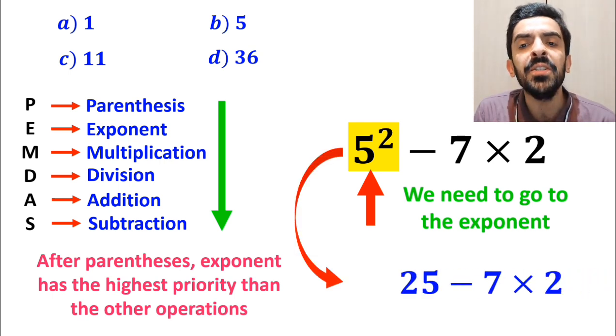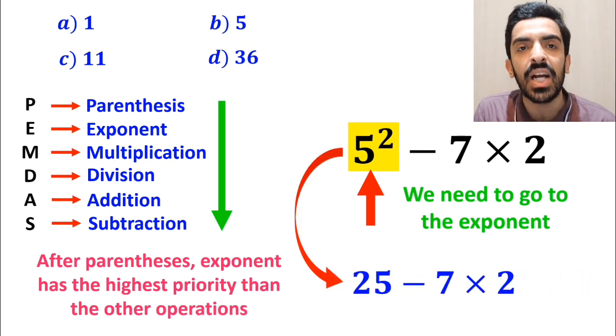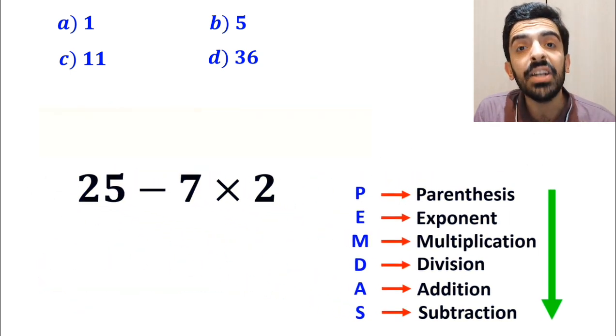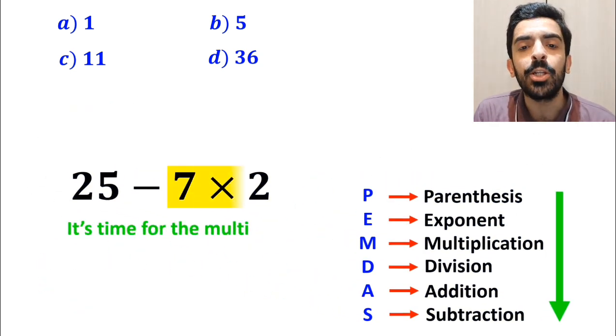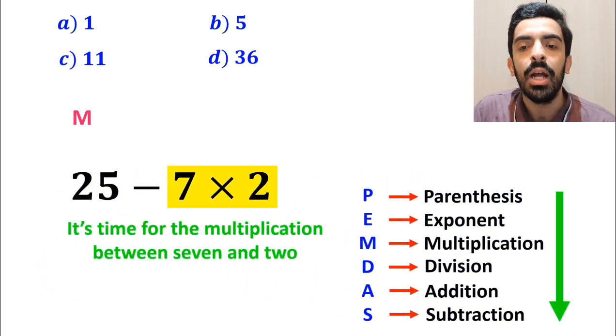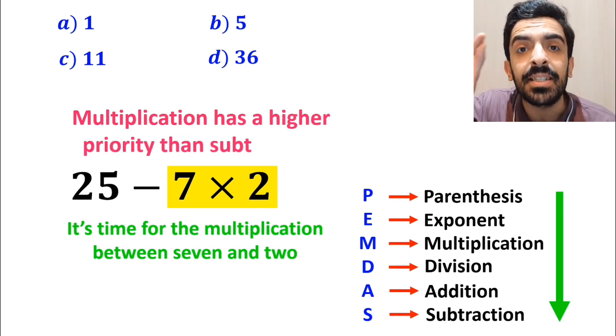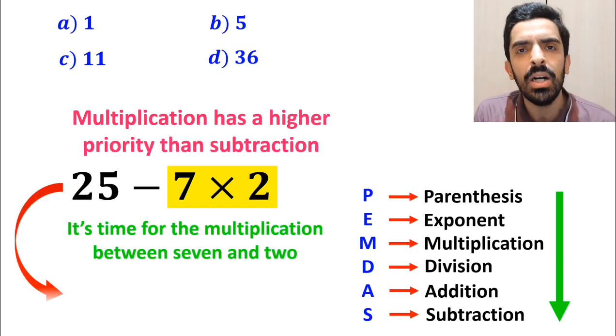So this expression simplifies to 25 minus 7 multiplied by 2. And the final step, it's time for the multiplication between 7 and 2, because multiplication has a higher priority than subtraction.